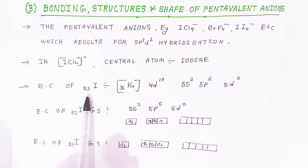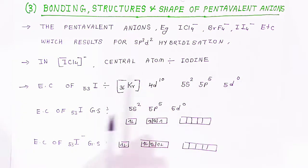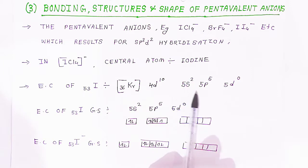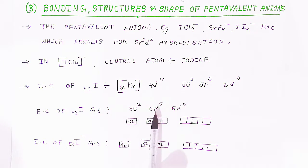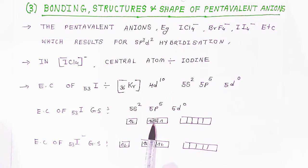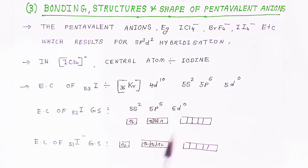The electronic configuration of iodine 53 is [Kr]36, 4d¹⁰, 5s², 5p⁵, 5d⁰. At the ground state, only the valence atomic orbitals participate in the bonding: 5s², 5p⁵, and 5d⁰. The 5d orbital has no electrons at all.